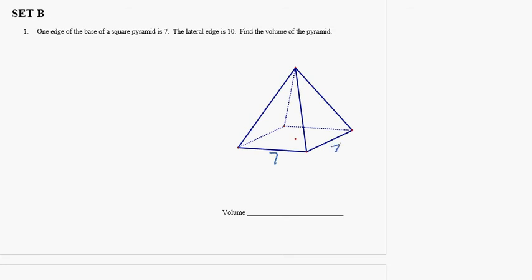And the lateral edge is 10. The lateral edge is where two faces meet along the sides. So this is going to be 10. And we want to find the volume of the pyramid.